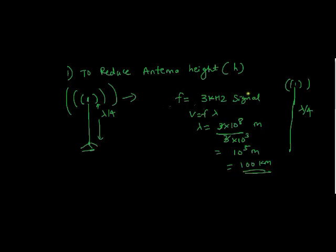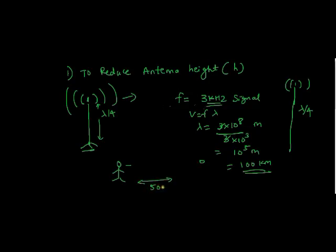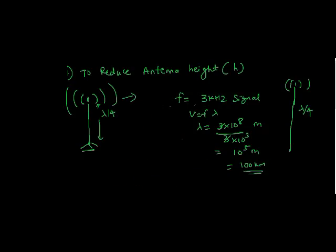If we don't use modulation technique and we want to transmit a 3 kHz signal from one point to another — say you are here and you want to communicate a message to your friend who is around 5000 meters away — you would need an antenna whose height is 100 kilometers. So this is practically impossible.